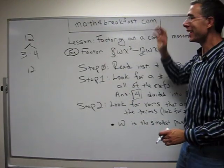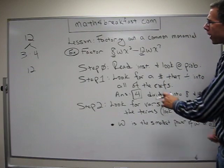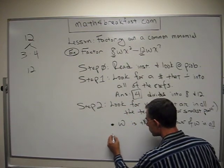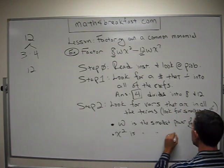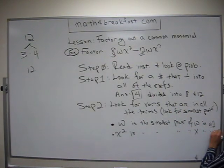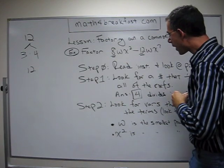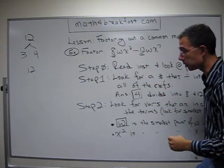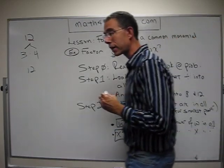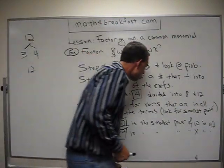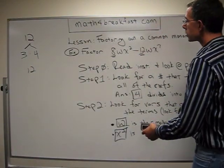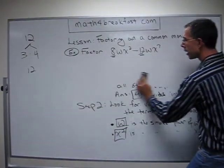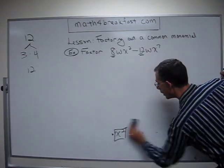There's more. There is an X — both of these terms have an X, and the smallest power is X squared. So X squared is the smallest power of X in all the terms. We've just found a few things: 4 divides into 8 and 12, W is in both terms, and X squared is the smallest power of X in all the terms. Keep in mind: we have the 4, the W, and the X squared.